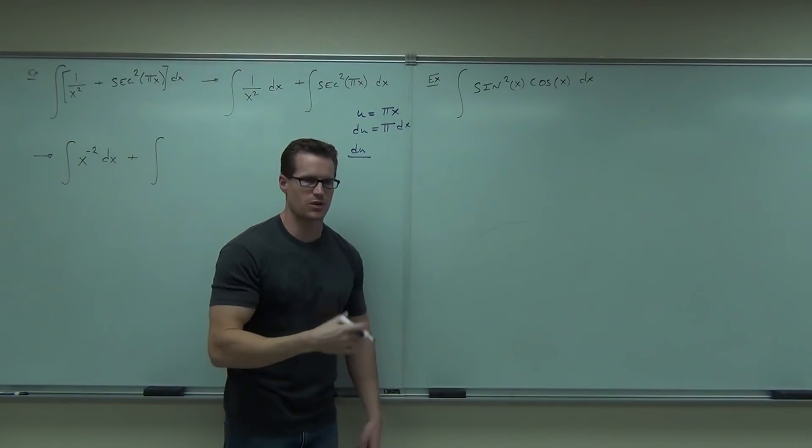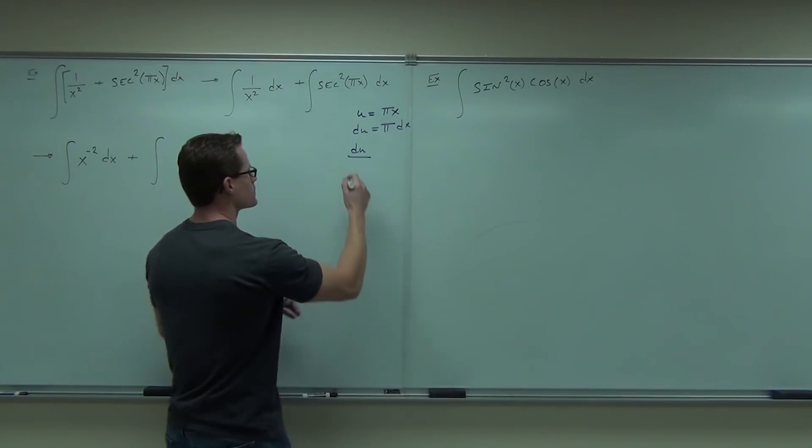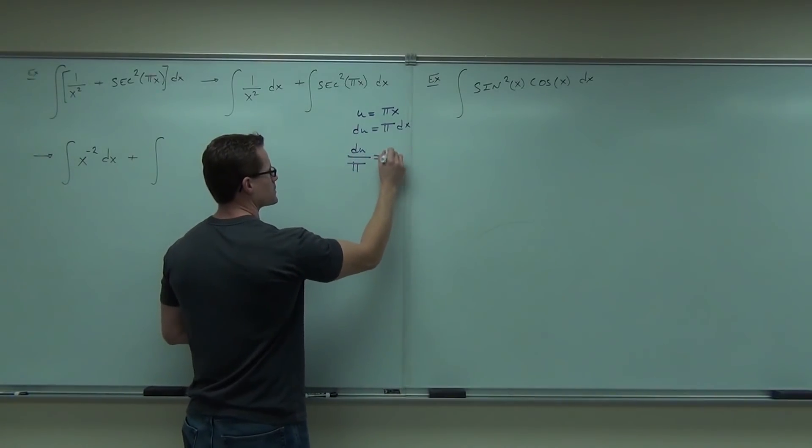Now it's not 3x, it's 3.141592, whatever, forever, but it's pi. So du over pi equals dx.